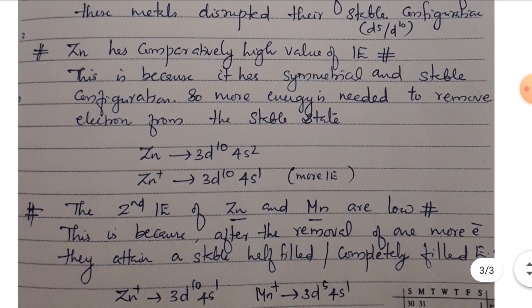Zinc has a comparatively high value of ionization enthalpy. This is because it has a symmetrical and stable configuration of 3d10-4s2. More energy is needed to remove an electron from this stable state, so the stable configuration will be disrupted.